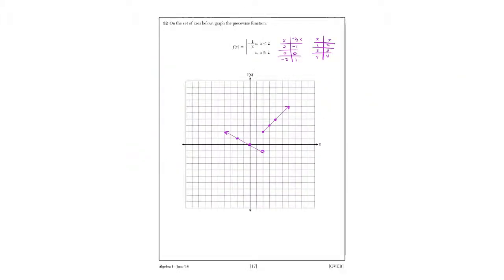And last question, part 2, question 32. Another kind of heavy two-pointer. Actually graphing a piecewise is a two-point question.